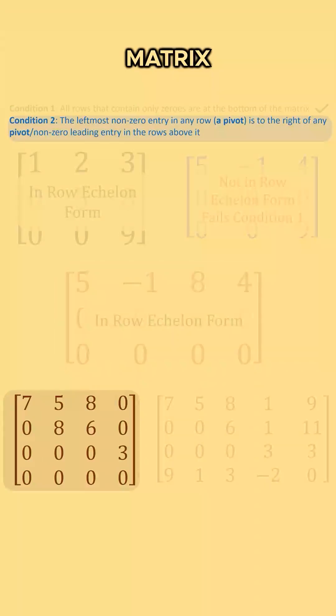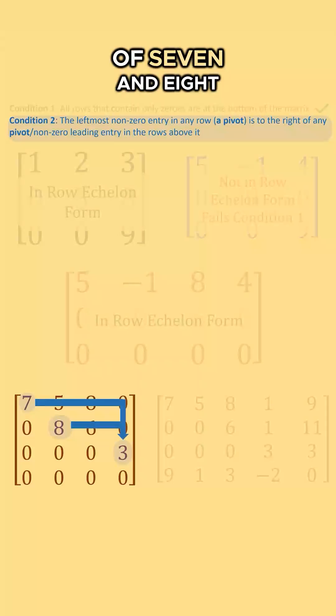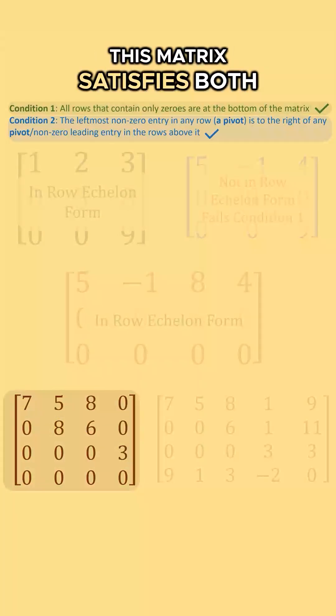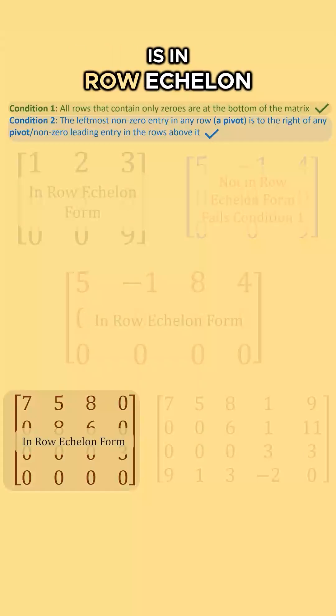In the bottom left matrix, the eight is to the right of seven, and the three is to the right of seven and eight above it. This matrix satisfies both conditions and so is in row echelon form.